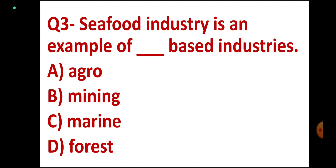Question number 3. Seafood industry is an example of DASH based industries. Options: Agro based, Mining based, Marine based, Forest based. Correct answer: Marine based industry. Option C. Correct.